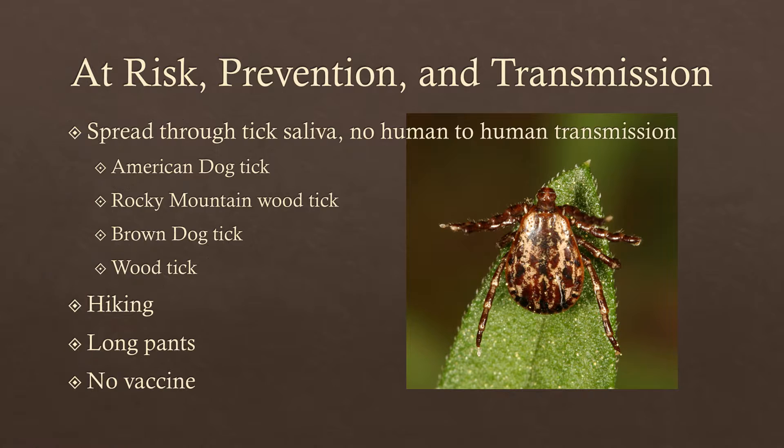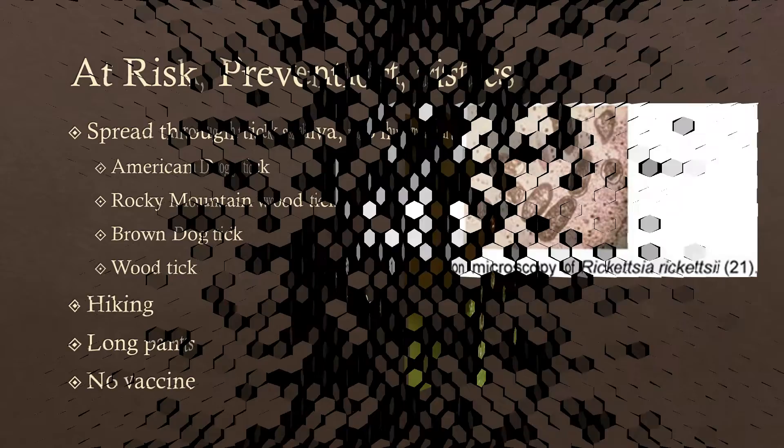There is a list of ticks that can spread the disease through their saliva, and there is no human-to-human transmission. People at risk are hikers and campers, who should wear long pants to prevent tick bites. There is no vaccination — they tried to develop a vaccine when the disease was first found, but it has been ineffective so far. So it's important to prevent exposure and remove ticks promptly. If you find a tick on your pet, remove it with tweezers or at least a tissue so that you don't risk getting the saliva into your own system.